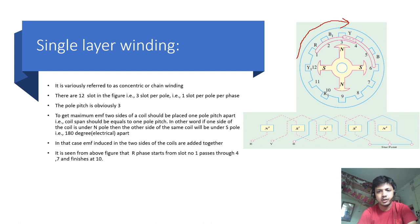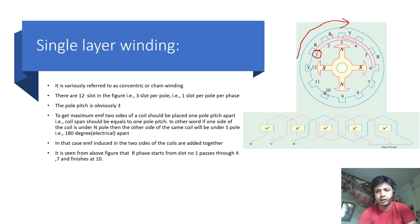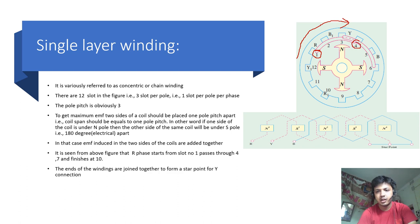It is seen from the figure that R-phase starts from slot number 1. As 3 slots equal 1 pole pitch and for maximum EMF the two sides of the coil will stay 1 pole pitch apart, it will then go through slot 4, then slot 7 (that is 180 degrees electrical), and it finishes at slot number 10.